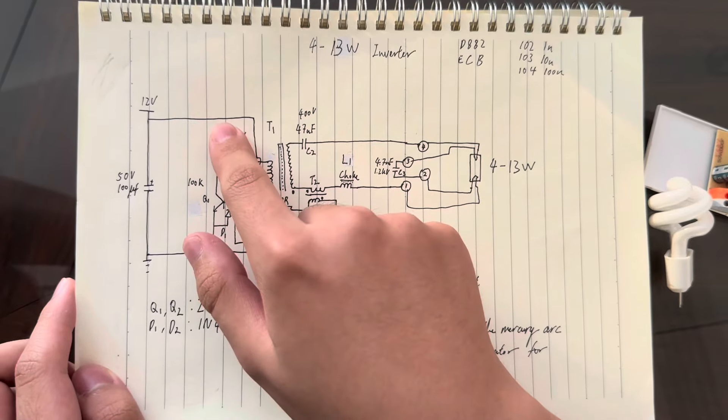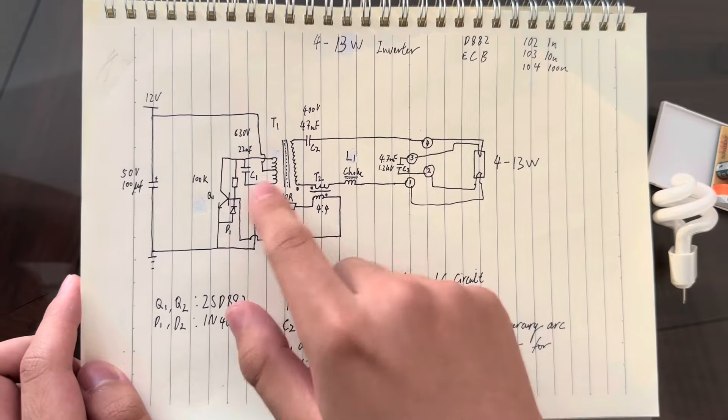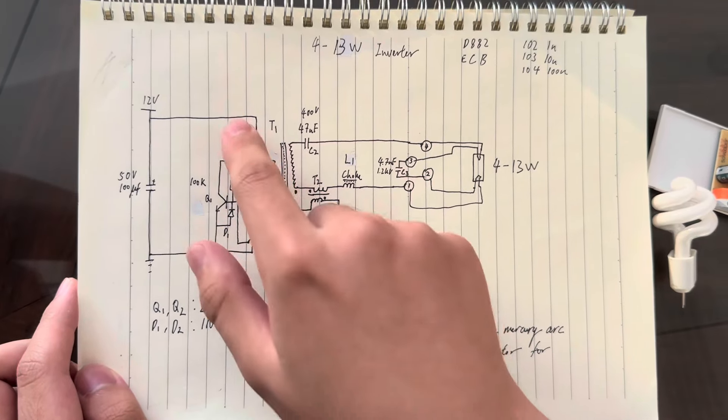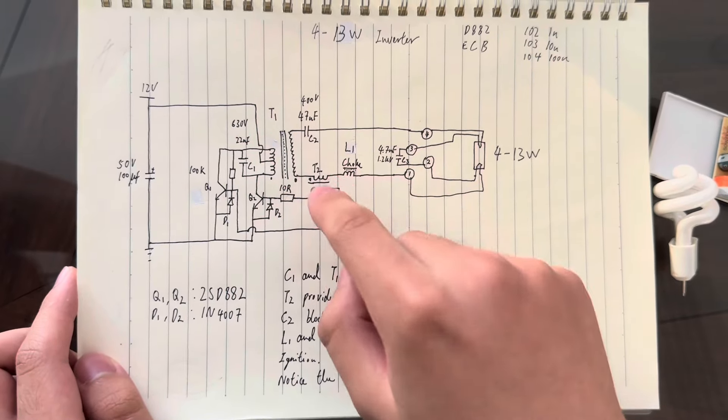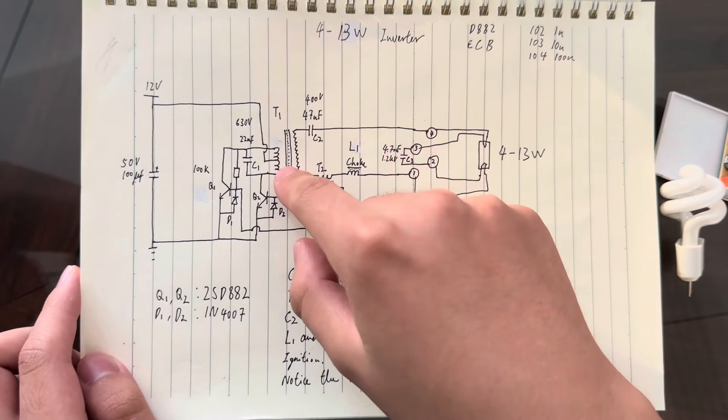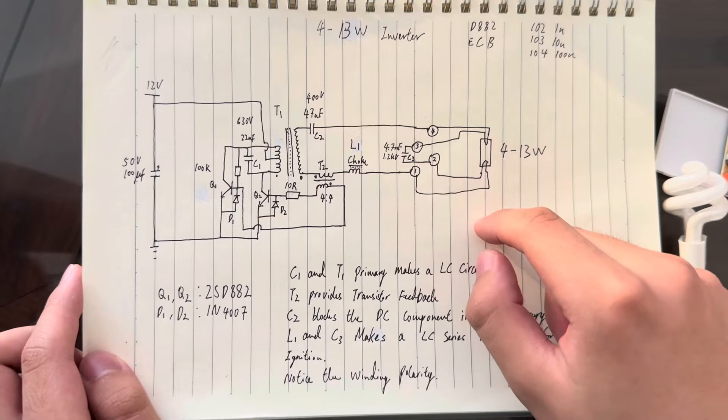The inductor in a Royer Baxandall oscillator here will be helping us to prevent cross-conduction. If cross-conduction happens during a Royer circuitry, what will happen is that this cross-conduction happens at a really small duration of time, but at that time.